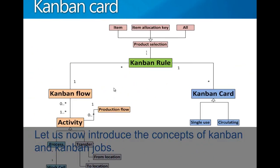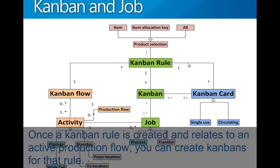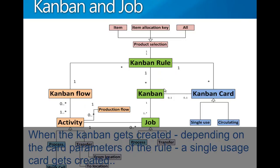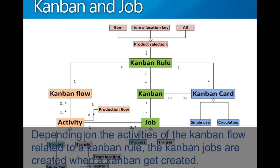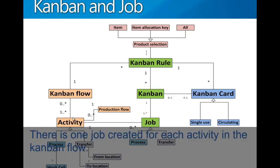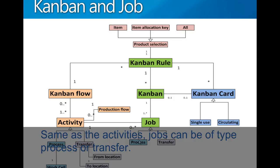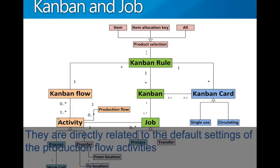Let us now introduce the concept of Kanban and Kanban jobs. Once you have defined a Kanban rule, you can create Kanbans based on this Kanban rule. When a Kanban gets created, depending on the allocation settings of the Kanban cards, a single usage Kanban card is automatically created or the Kanban can get automatically allocated to a circulating card. Depending on the activities of the Kanban flow, on the creation of a Kanban, the Kanban jobs are created — one job for each activity in the Kanban flow. Same as the activities, jobs can be of type process or transfer.